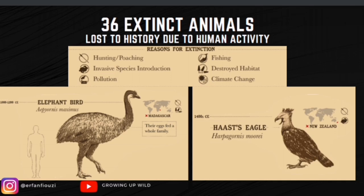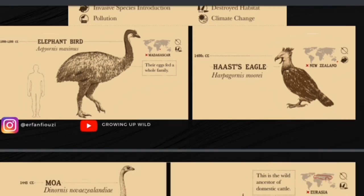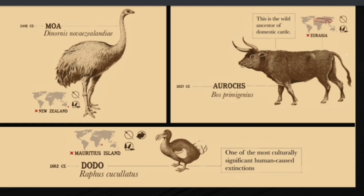Around 10,000 to 1200 CE, the elephant bird went extinct — their eggs could feed a whole family. In the 14th century, Haast's eagle also went extinct due to hunting, poaching, and invasive species. In 1445, the moa also went extinct due to poaching and destruction of its habitat. In 1627 CE, the auroch — the wild ancestor of domestic cattle that lived in Eurasia — went extinct due to hunting and destruction of its habitat.